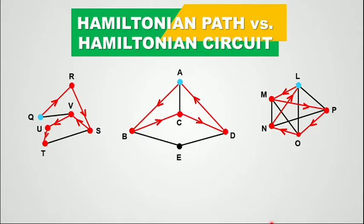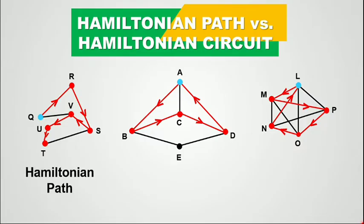In the first graph, the route shown by the edges colored red — what do you think this route is? Is it a Hamiltonian path or a Hamiltonian circuit? Definitely this is a Hamiltonian path. As you can see, we started from vertex Q and then go to R, to S, to V, to U, and to T. We started and ended in different vertices, and we passed through each vertex of the graph. So this is a Hamiltonian path.